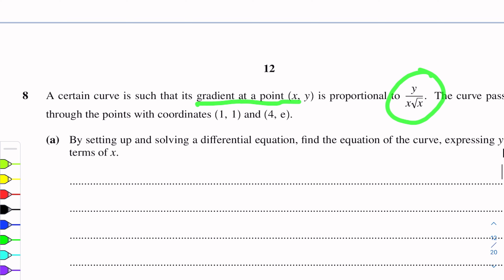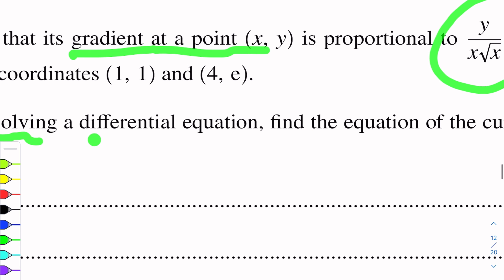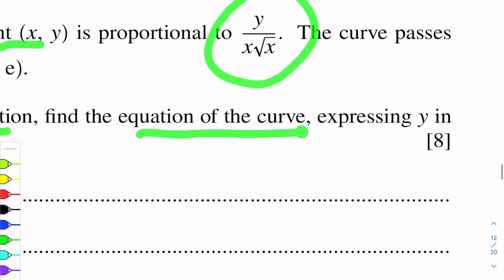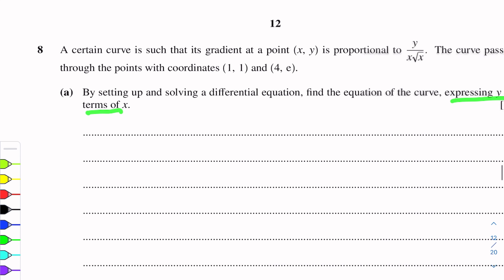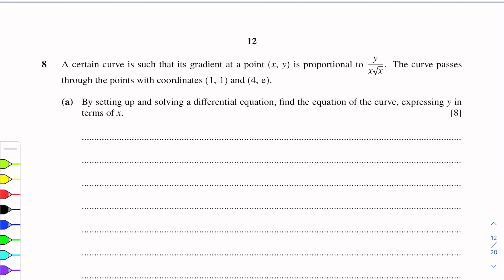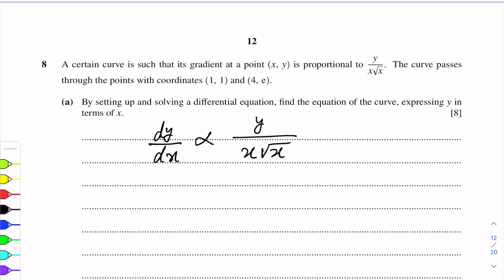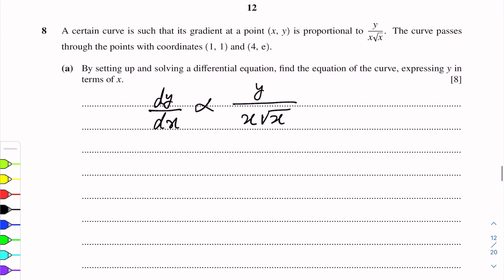So we will write the gradient expression. By setting up and solving a differential equation, we need to find the equation of the curve expressing y in terms of x. First, the gradient dy/dx is proportional to y over x into root x — not equal to, but proportional. So we remove the proportionality sign and introduce constant k: dy/dx = k · y over x · root x.